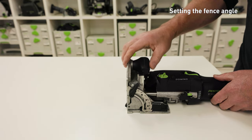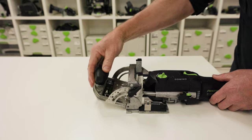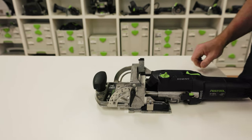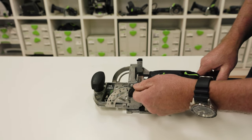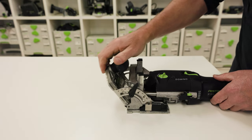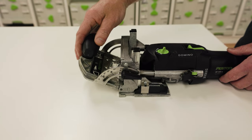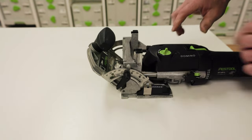Some joints require the fence to be set at an angle from the mortising bit. Loosen the fence angle locking lever by rotating it anti-clockwise. Rotate the fence to the desired angle and tighten the locking lever.